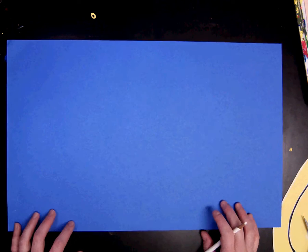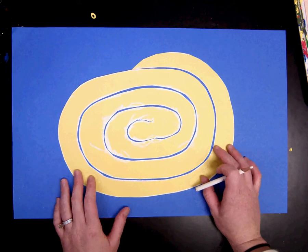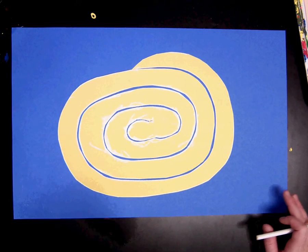We're going to have it the landscape way. At your table you're going to get two snake tracers, so you're going to have to take turns when tracing your snake.